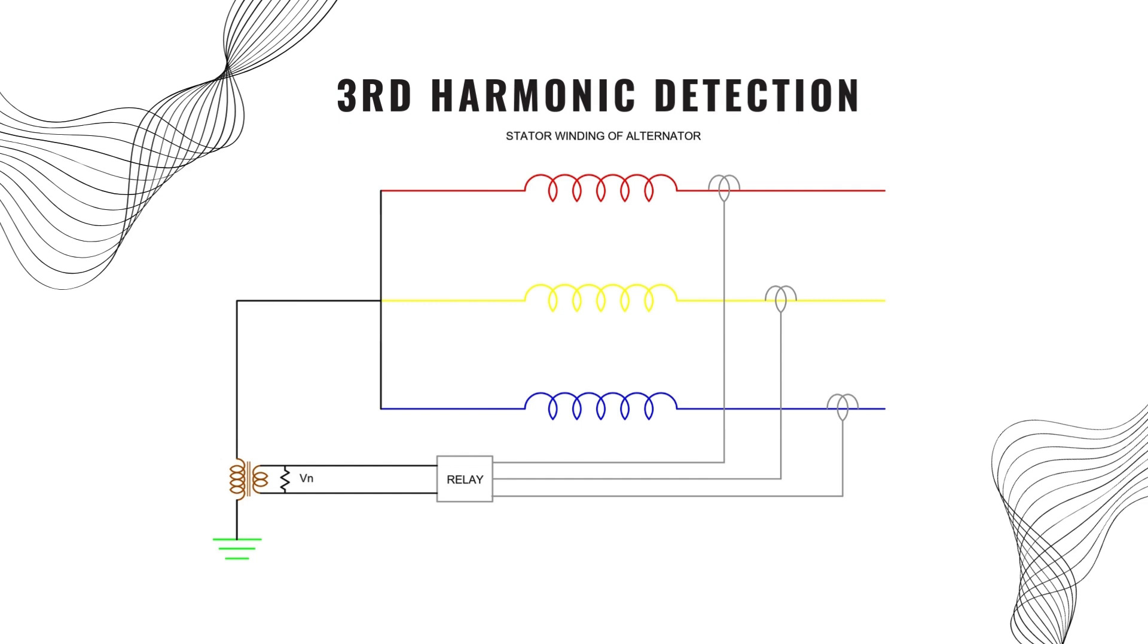The relay always monitors the value of the third harmonic component across the secondary terminal of the NGT. When the value becomes lower than the predetermined value, then the relay senses an earth fault occurred on the generator and trips the generator.